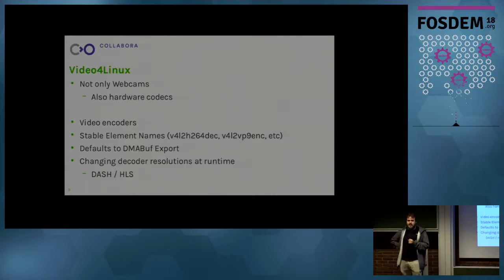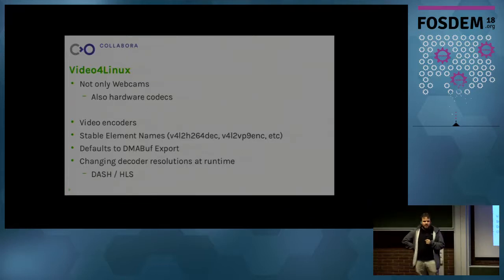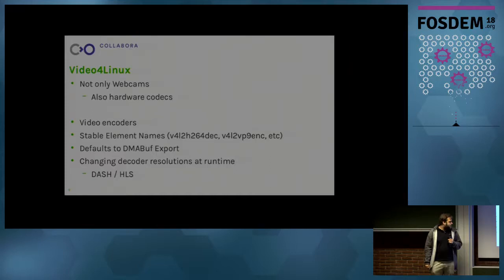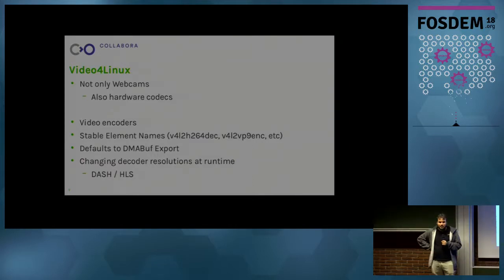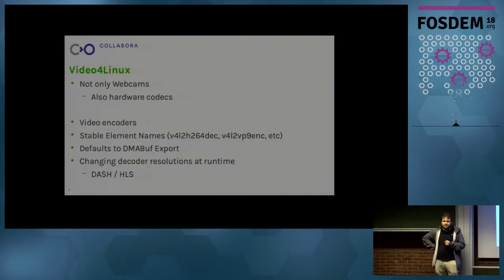Another big improvement is that we now default to DMA buff in the decoder, meaning decoder-to-display is zero copy by default on most platforms. Previously you had to tweak properties to make it work — it could work, but was a lot of effort. Now the clean negotiation means it should just work. Also recently merged is the ability to change resolutions at runtime for the decoder, so if your encoded stream changes resolution you no longer have to stop the entire pipeline. This is really important for adaptive streaming like DASH and HLS, which often change resolution as they adapt bitrate.